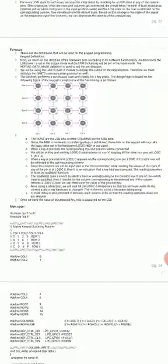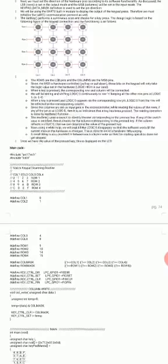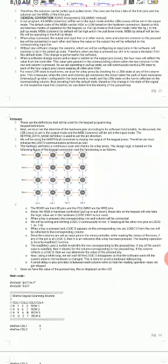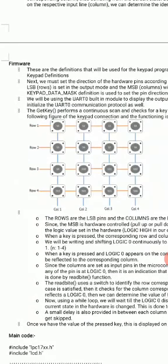This 4x4 matrix keypad is a very important program — you have already studied it in the microprocessor course in the fourth semester. It is called a 4x4 matrix keypad because it has four rows and four columns. Through these rows and columns we send and read data. The keypad is an input device, and at the intersection of each row and column there is a switch.